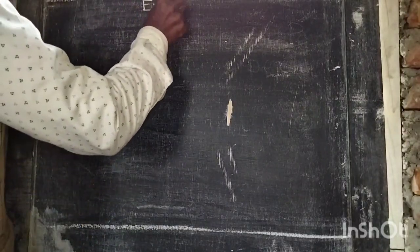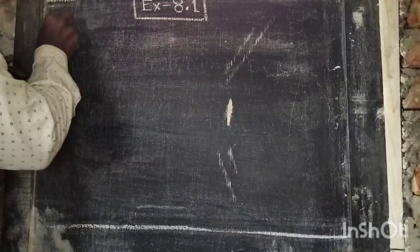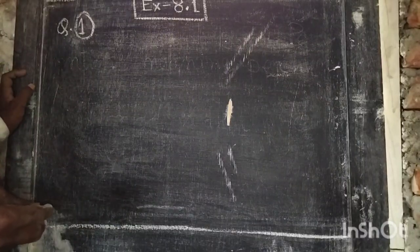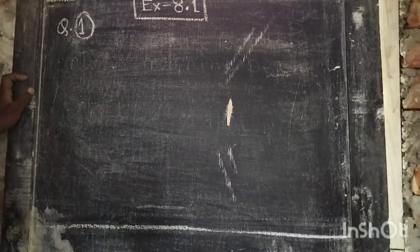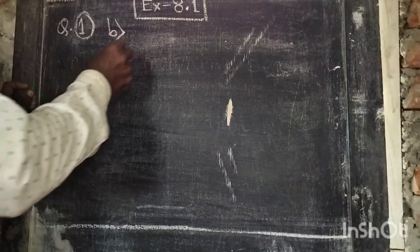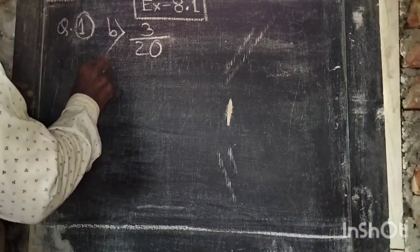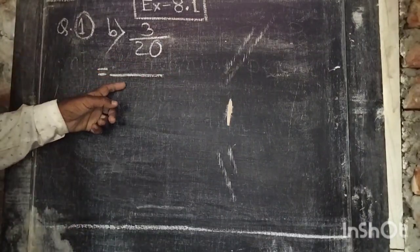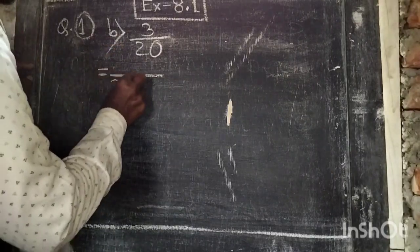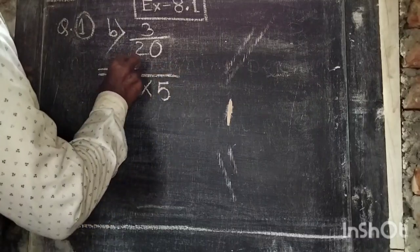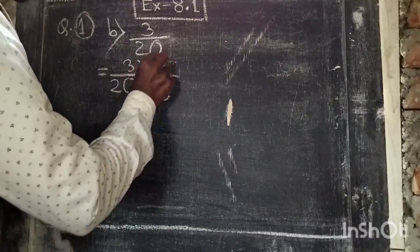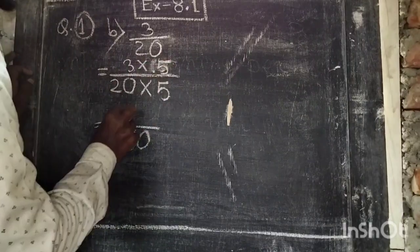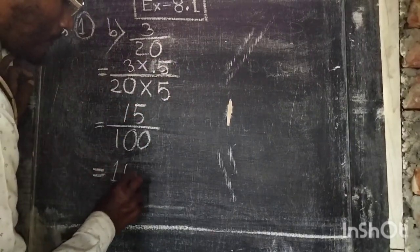Exercise 8.1, Question 1: Convert the following fractions to percentages. Part B: 3 by 20. To turn it into a percentage, the denominator must become 100. So we multiply 20 by 5 to get 100, and the numerator 3 by 5 to get 15. So 3/20 equals 15 percent.